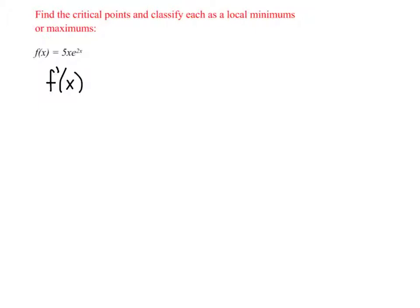You'll notice that this is a product. We've got 5x and we've got e to the 2x. So we've got our first multiplied by derivative of the second plus the second multiplied by derivative of the first. So we could maybe write that a little nicer. It's 10x e to the 2x plus 5 e to the 2x.